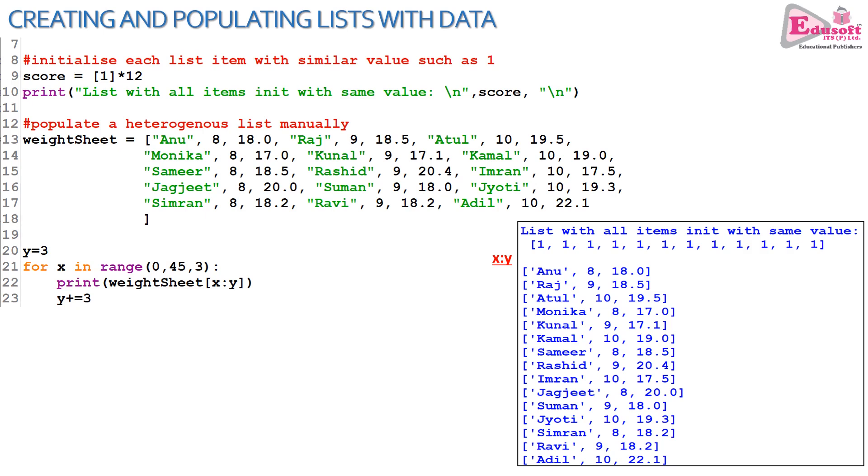Moving on further, line 13, weightSheet. The list name is weightSheet where the name of the student, the age of the student, and the weight of the student in kg is being stored. Around 15 students' data is there and see how the list is created.